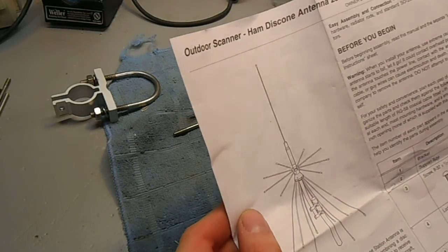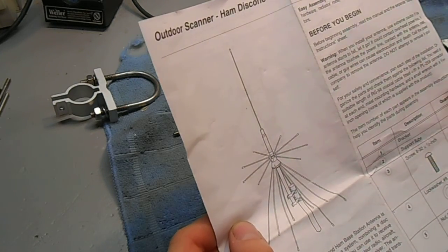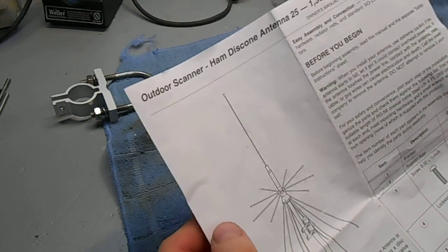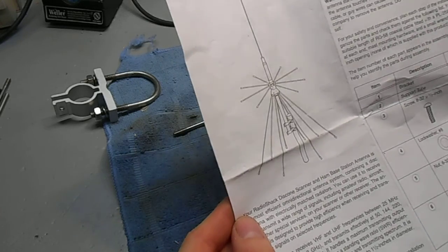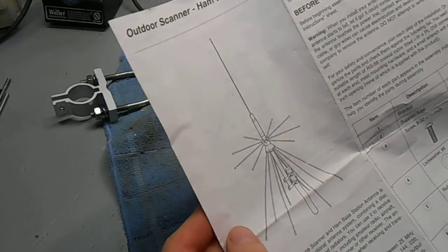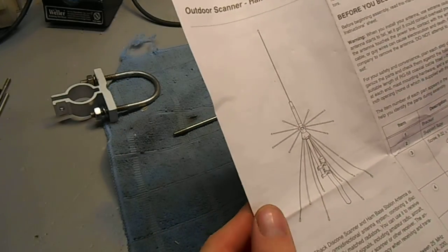This is an overview of the Radio Shack Discone antenna. This antenna is designed to operate between 25 MHz and 1300 MHz. The construction itself of the antenna is fairly high quality. All the supporting hardware and the elements are all made out of stainless steel.